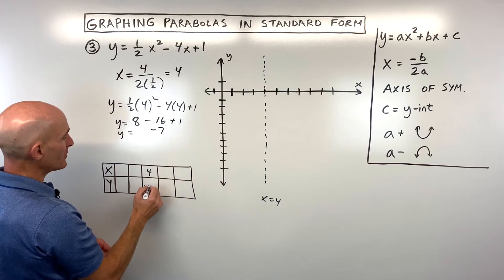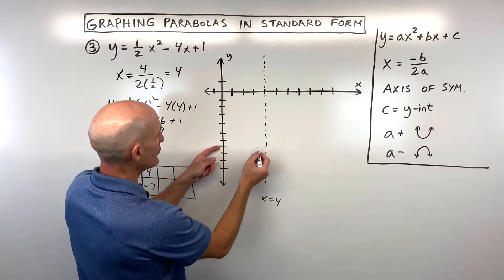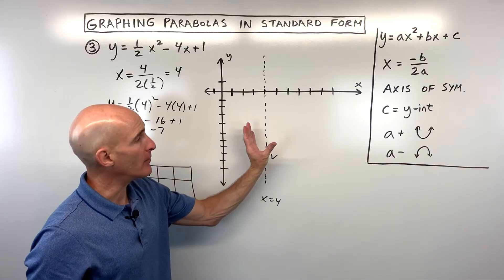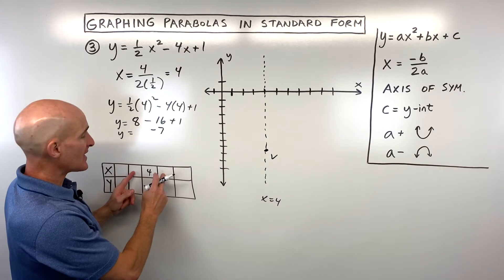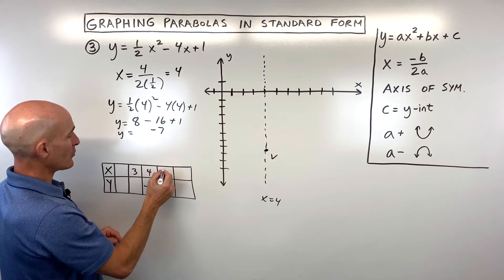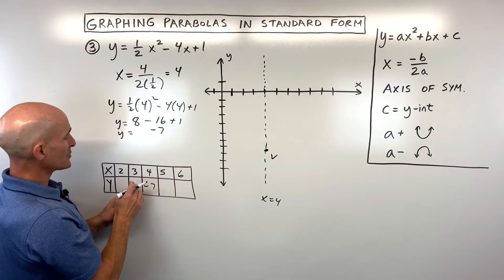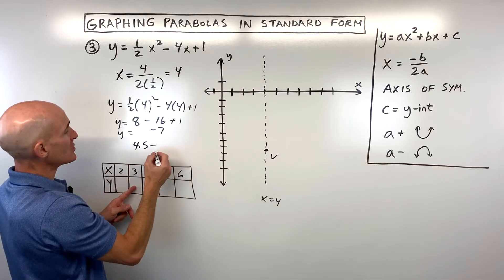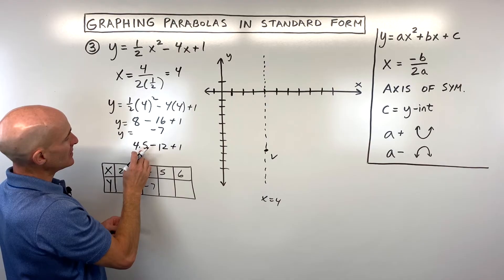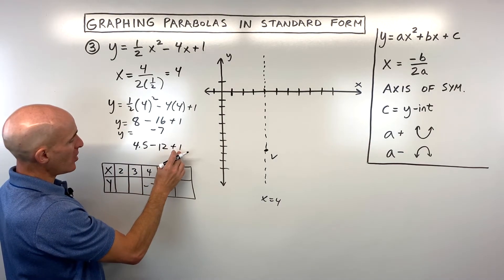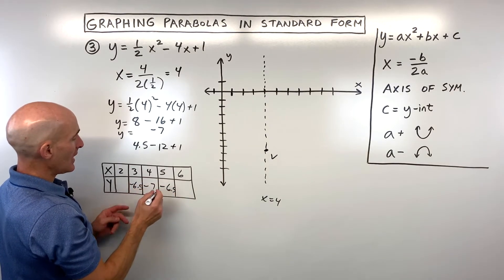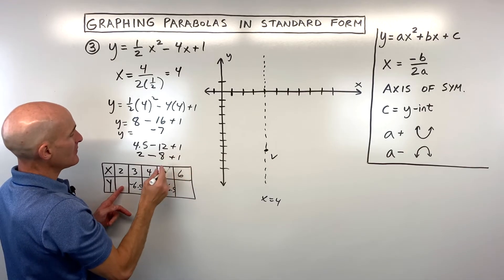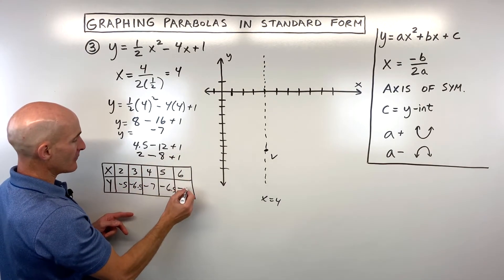The vertex is at (4, negative 7). The a value is positive, which tells us the graph opens up and gives a minimum value. Picking points on either side: plugging in 3 gives 3 squared is 9, times one half is 4.5, minus 4 times 3 is 12. So 4.5 minus 12 plus 1 gives negative 6.5. Plugging in 2 gives 2 squared is 4, times one half is 2, minus 4 times 2 is 8. So 2 minus 8 plus 1 gives negative 5 for both symmetric points.